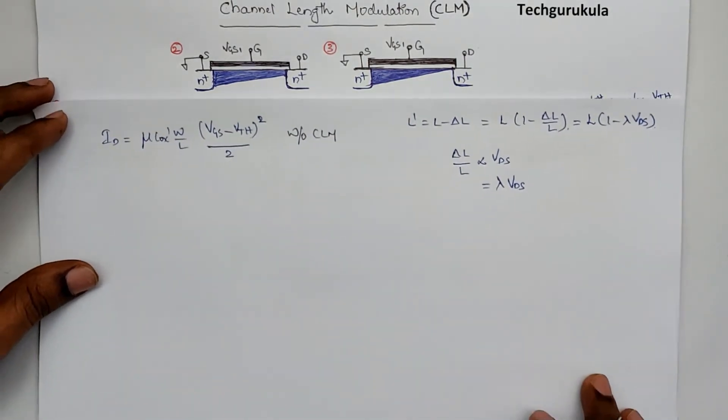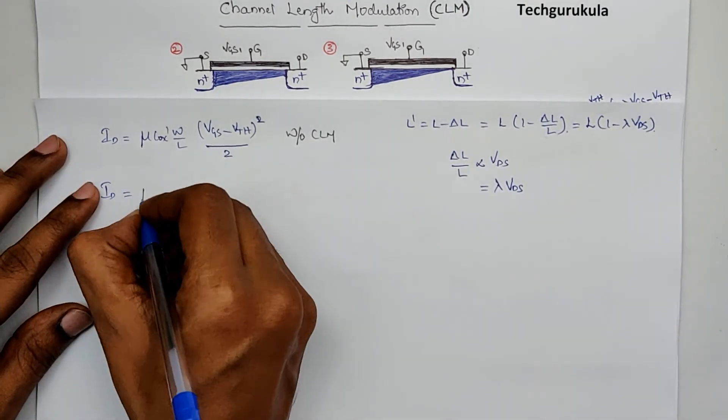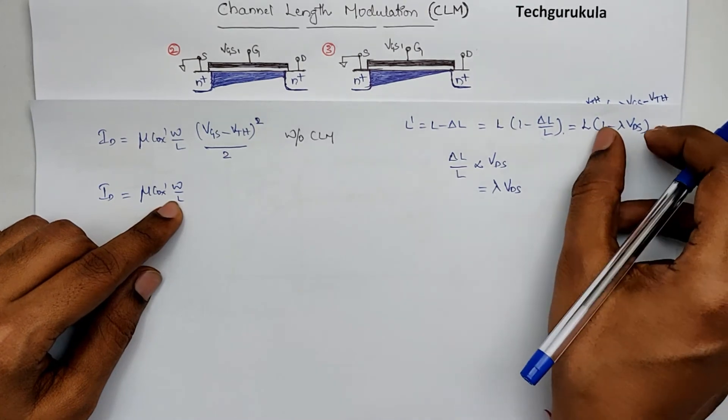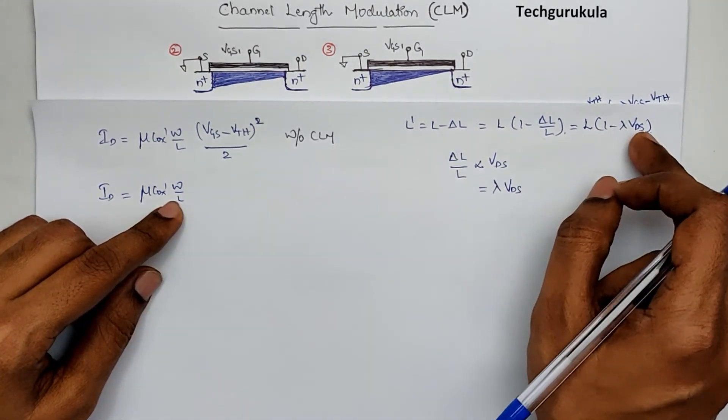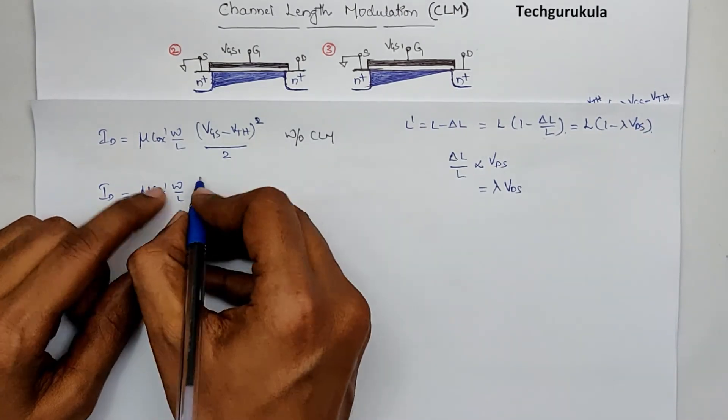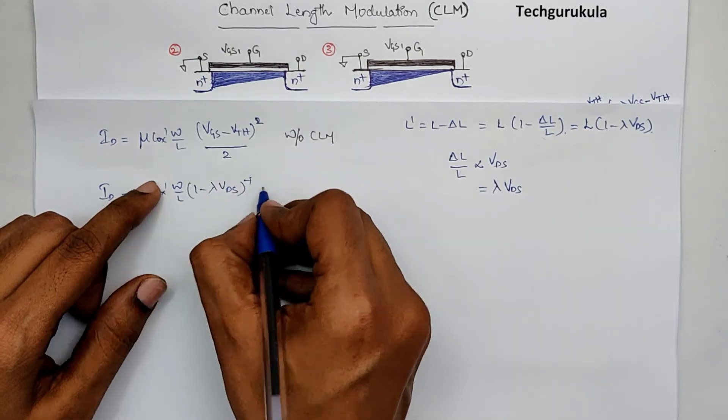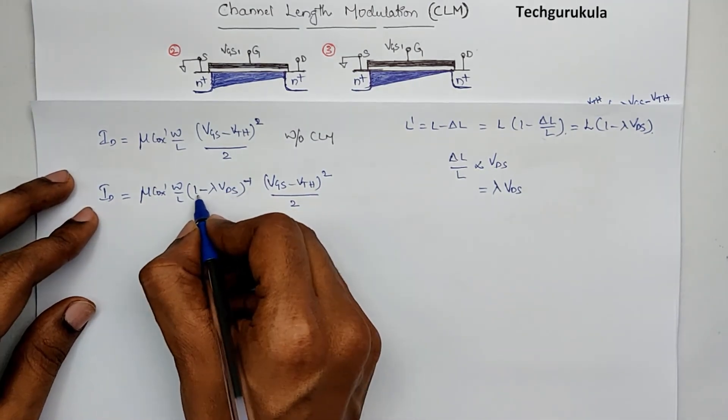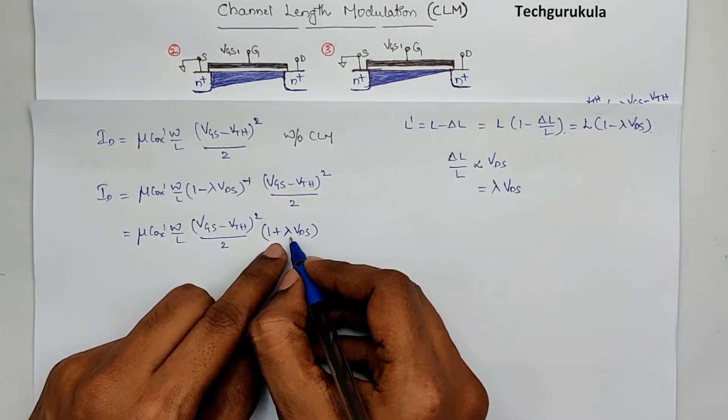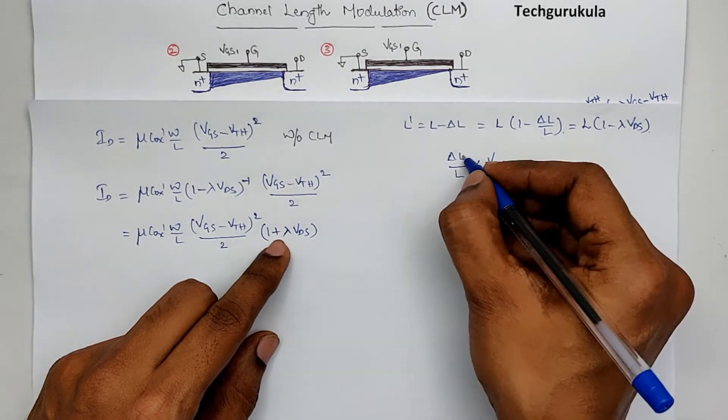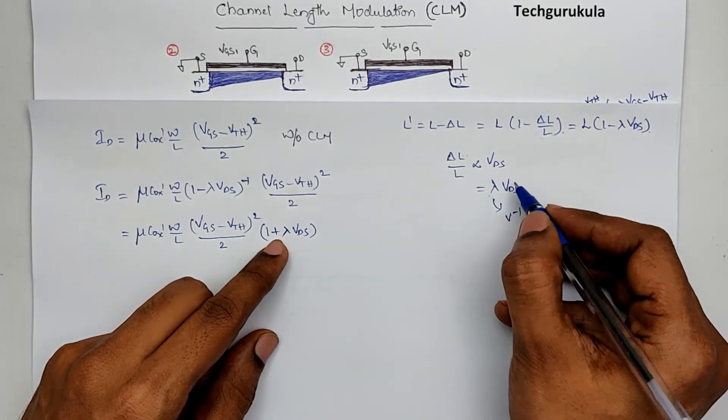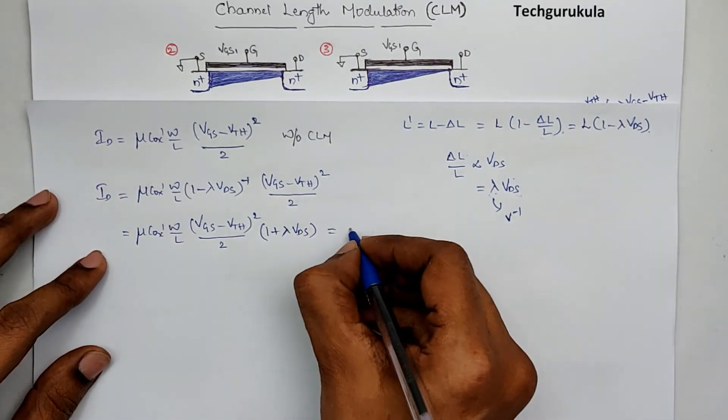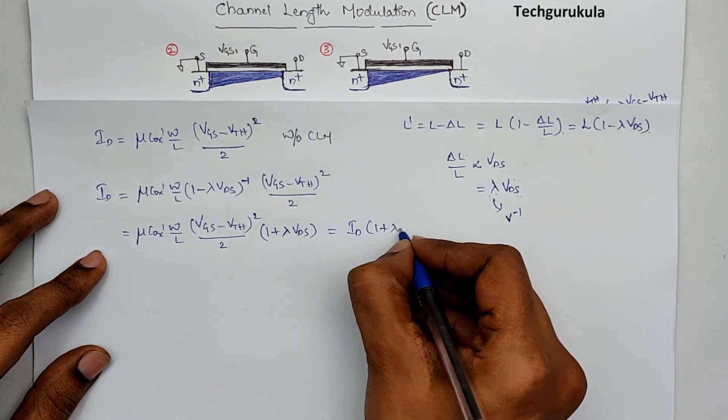We will substitute this value here. In which case Id would be equal to mu C ox prime W by L. So L is written as L times 1 minus lambda VDS. So this will be in the denominator. I am going to take this in the numerator so that it becomes 1 minus lambda VDS power minus 1, times VGS minus VTH whole square over 2. Taking lambda times VDS is very less than 1, we can rewrite this expression. Where if you see lambda units would be volt inverse, because this is normalized. Even this entire term should be unit less. If this is volt, this is volt inverse. Hence we should not be having units. Lambda is volt inverse.